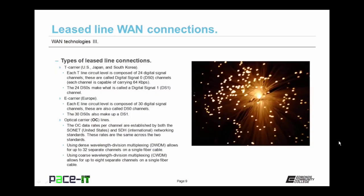There are different types of leased line connections. In the United States, Japan, and South Korea, there are T carrier lines. Each T line is composed of 24 digital signal channels — often called Digital Signal Zero, or DS0, channels. Each channel is capable of carrying 64 kilobits per second. The 24 DS0s make up what is called a DS1 channel. In Europe, we have E carrier lines, where each E line is composed of 30 DS0 channels, which also make up a DS1 channel.